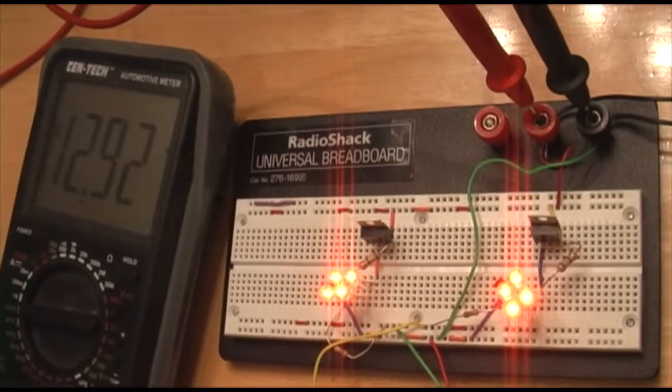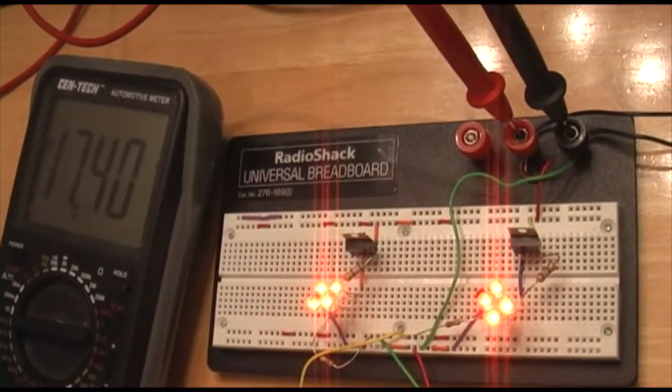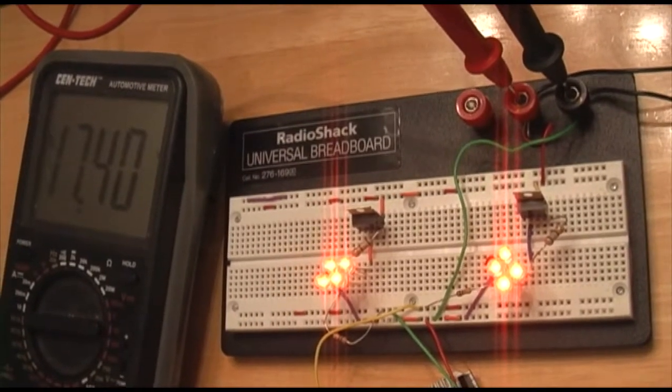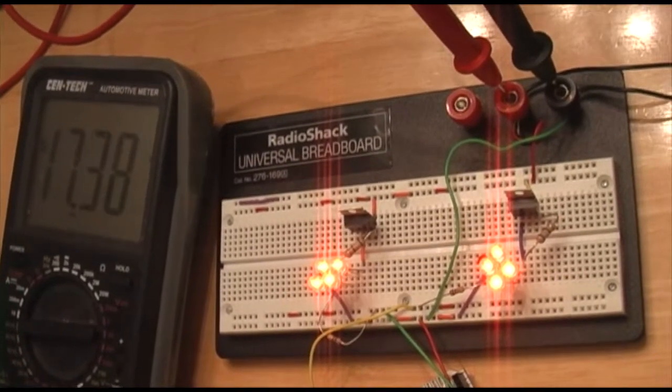Here you see we're at 13 volts. Notice the light brightness. And the brightness does not change with the increase in voltage. That's because we're using a constant current source set for 20 milliamps.